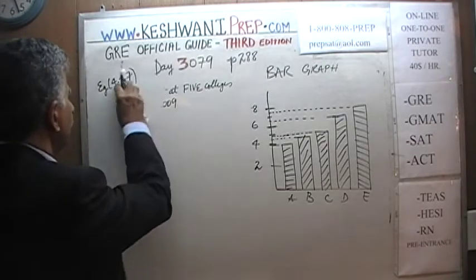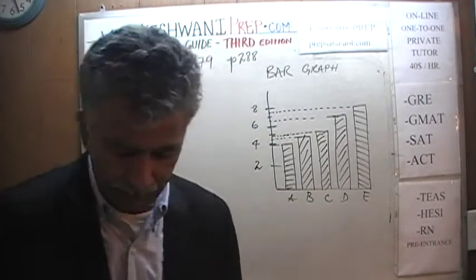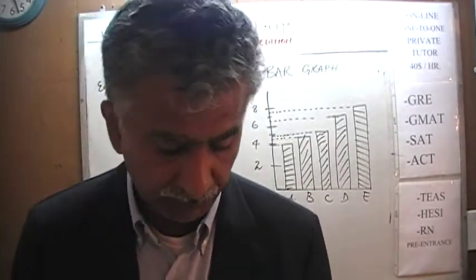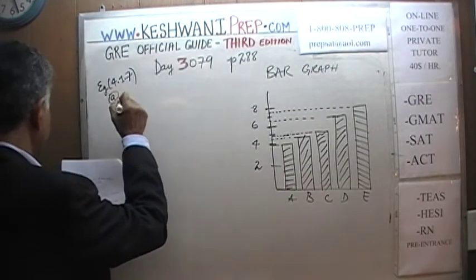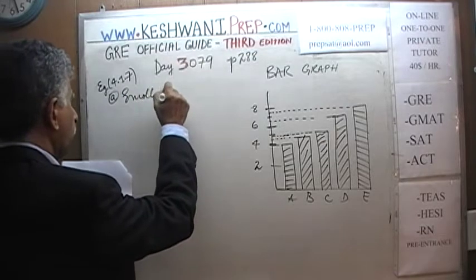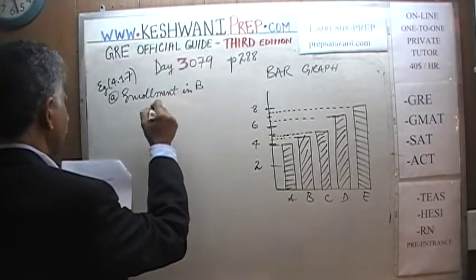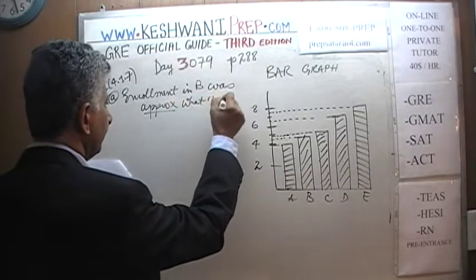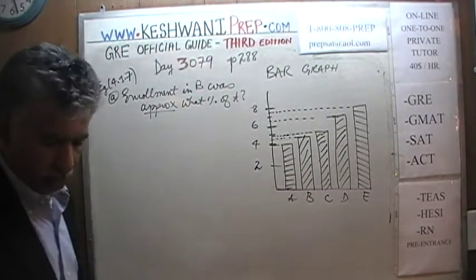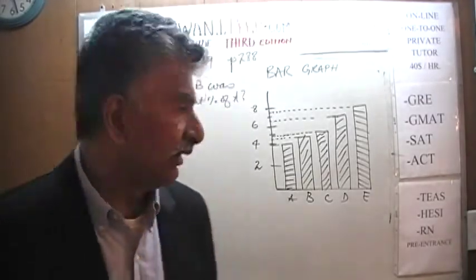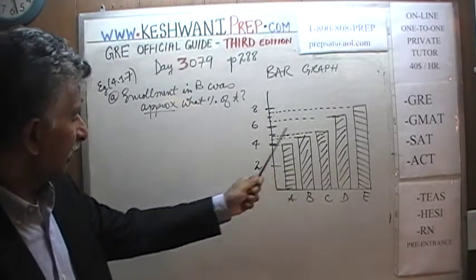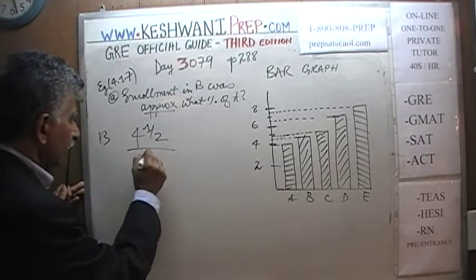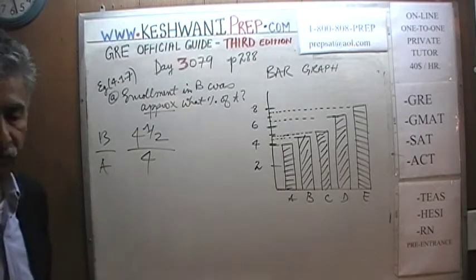Now let's answer the questions. Question one says: enrollment in College B was approximately what percent of enrollment in College A? College B was 4,500 and College A was 4,000. So we're looking for the ratio 4,500 over 4,000, expressed as a percentage. Percentage means out of 100, so we need to make the denominator 100.